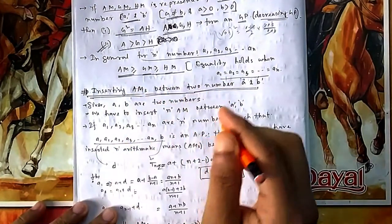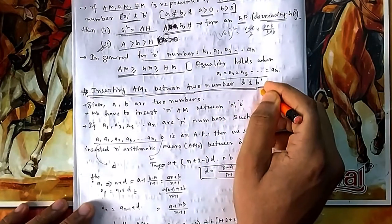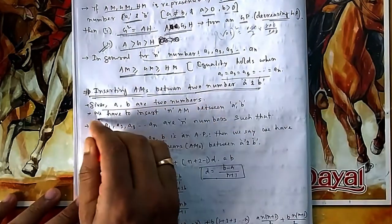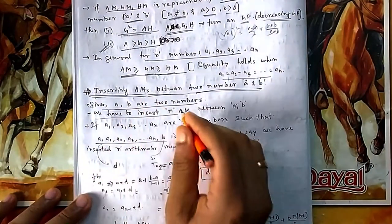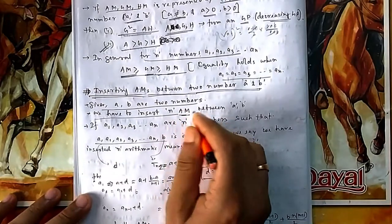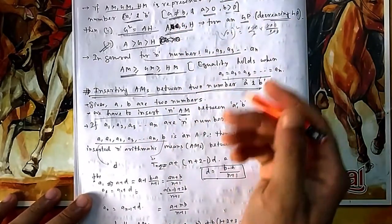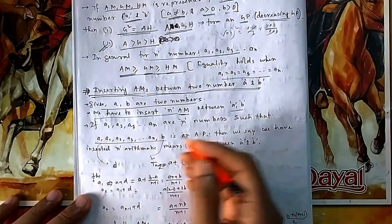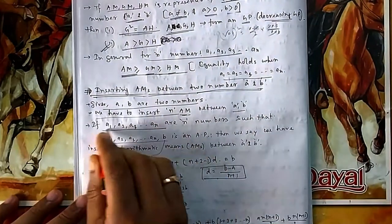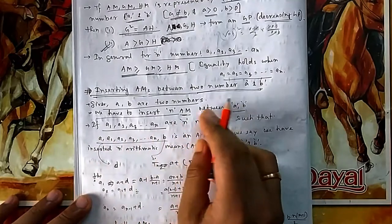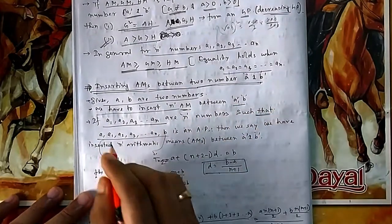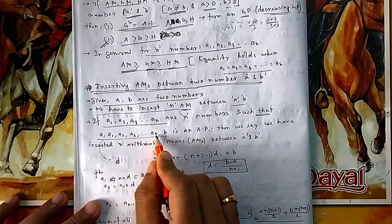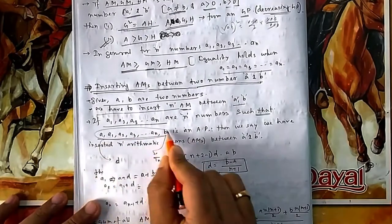The topic is to insert different AMs — arithmetic means — between two numbers. Given two numbers a and b, you are asked to insert n arithmetic means. Suppose a1, a2, up to an are n numbers such that a, a1, a2, ..., an, b — this whole series forms an AP.